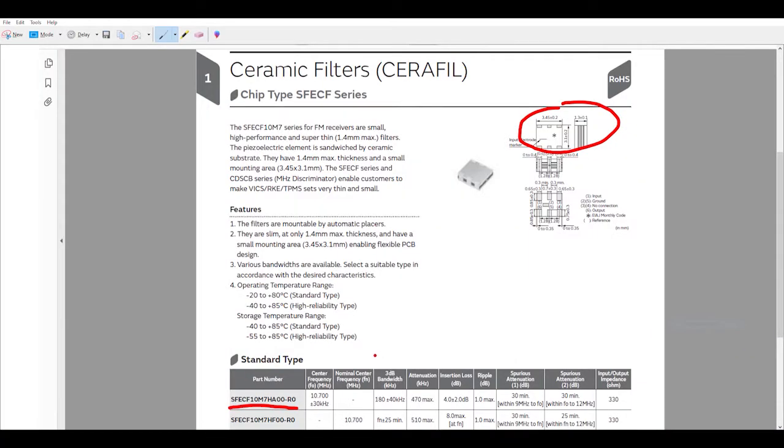The bandpass filter on the stock design is an LC network of discrete parts, and it takes up considerably more space on the board, and also required adjustment to reach the correct 10.7 MHz center frequency. This off-the-shelf ceramic filter has good specs. Bandwidth is 180 kHz, which compares favorably with the stock filter's bandwidth of about 200 kHz. Now, it does have an insertion loss of 4 dB nominal, which is a bit concerning, given that I'm trying to get more gain from these changes, but I also don't know what the insertion loss of the stock design is to compare it to.